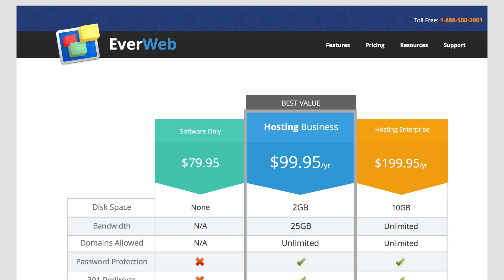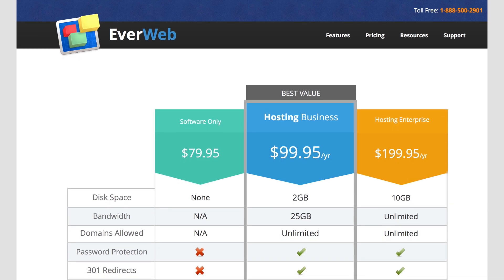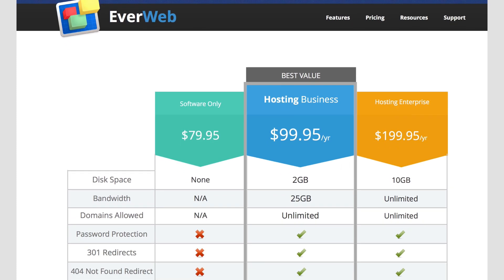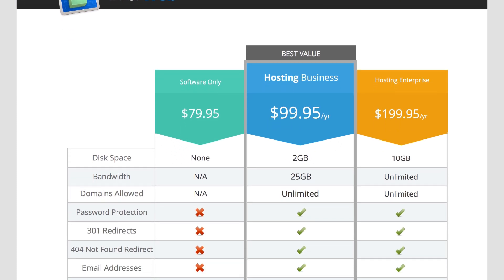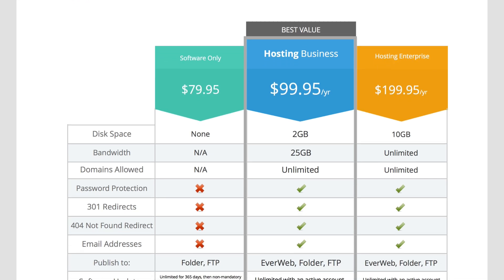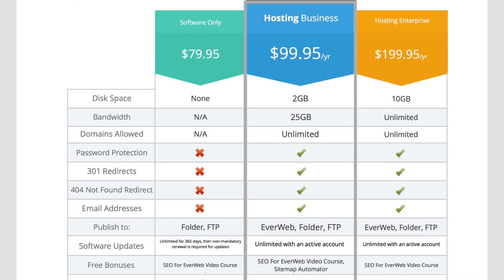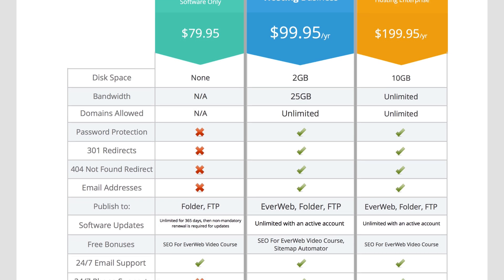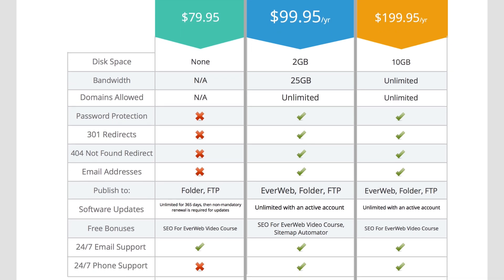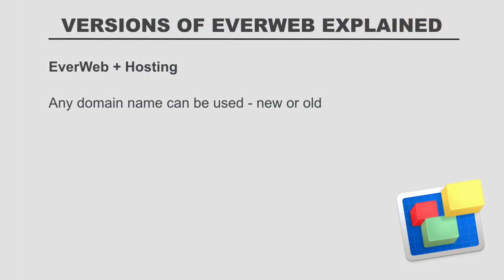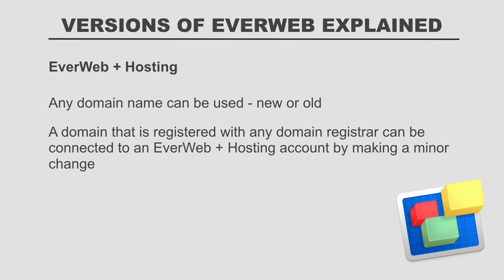Extra features included in EverWeb that can only be used when hosting on an EverWeb hosting account are: password protection, 301 redirects, 404 not found redirects, and easy setup of custom email addresses. For more information on these, please see the EverWeb video course. You can use any domain on an EverWeb hosting account — if you already own a domain, you can change the domain settings to connect it to your EverWeb hosting account, and more information is provided after you sign up.